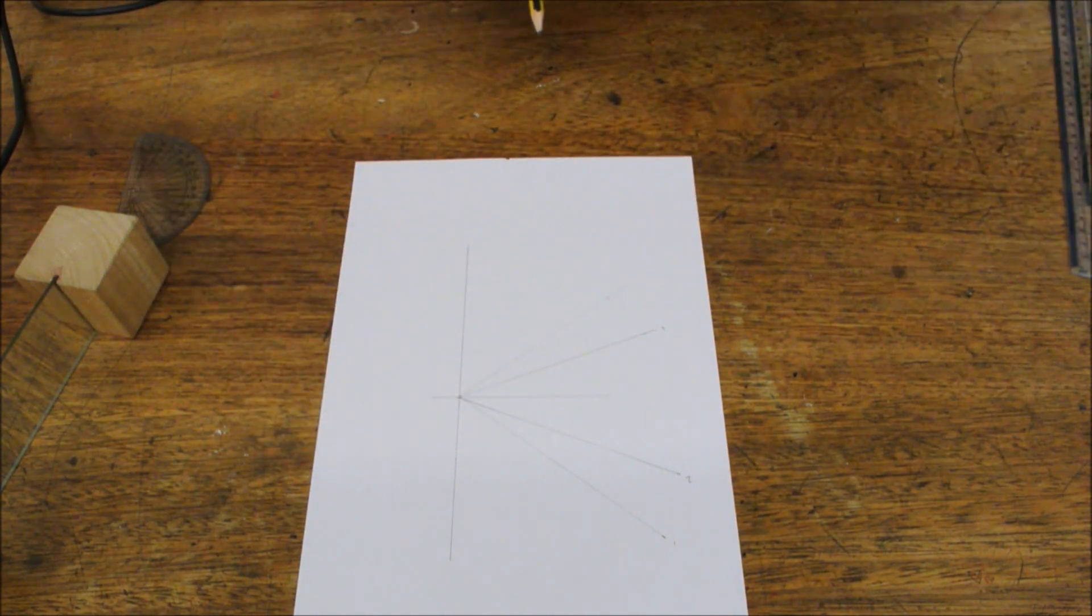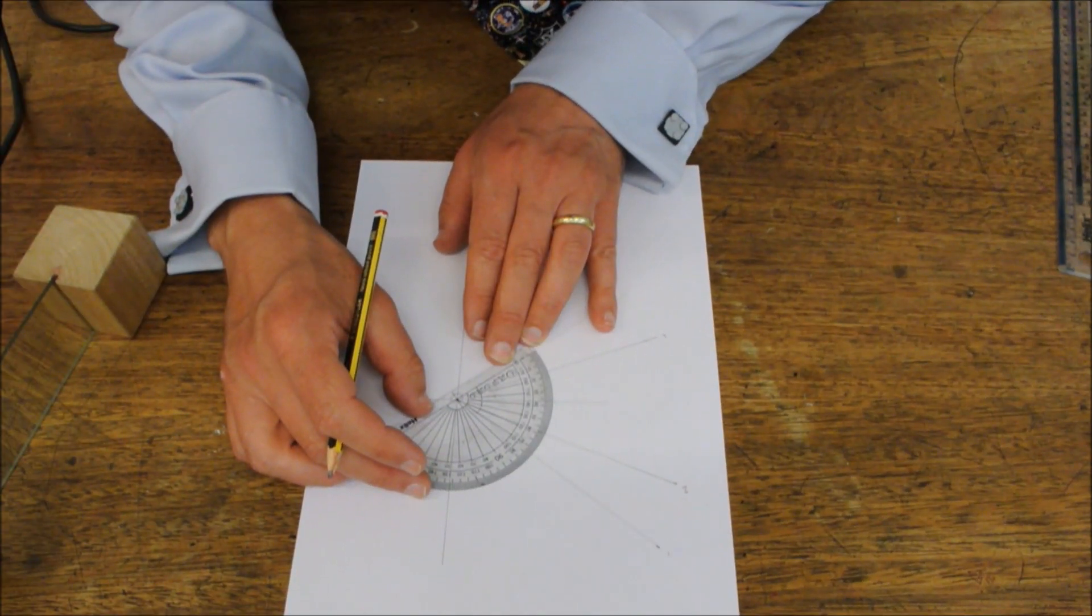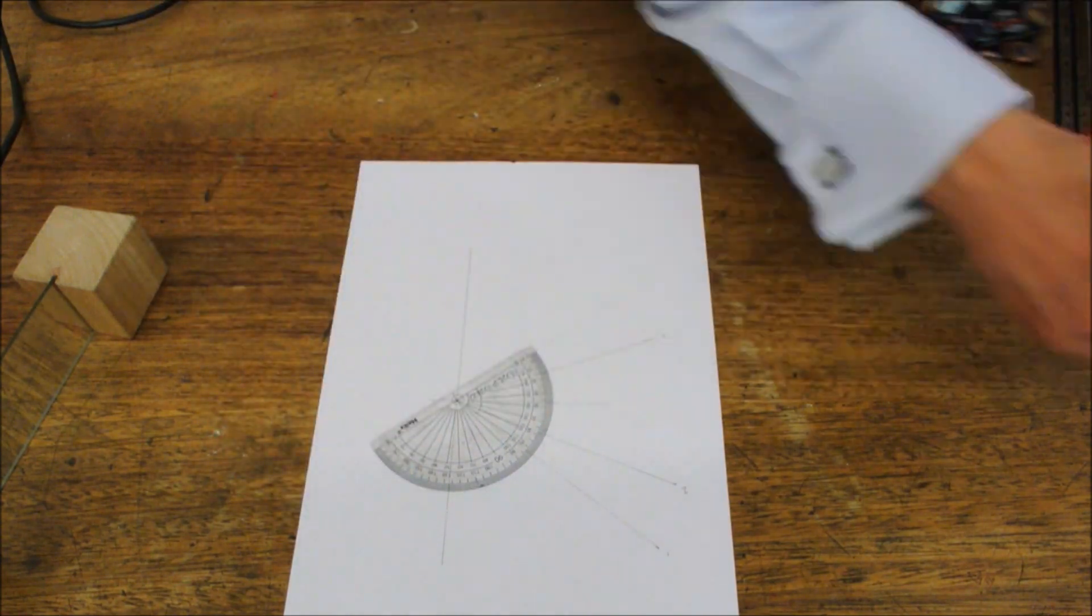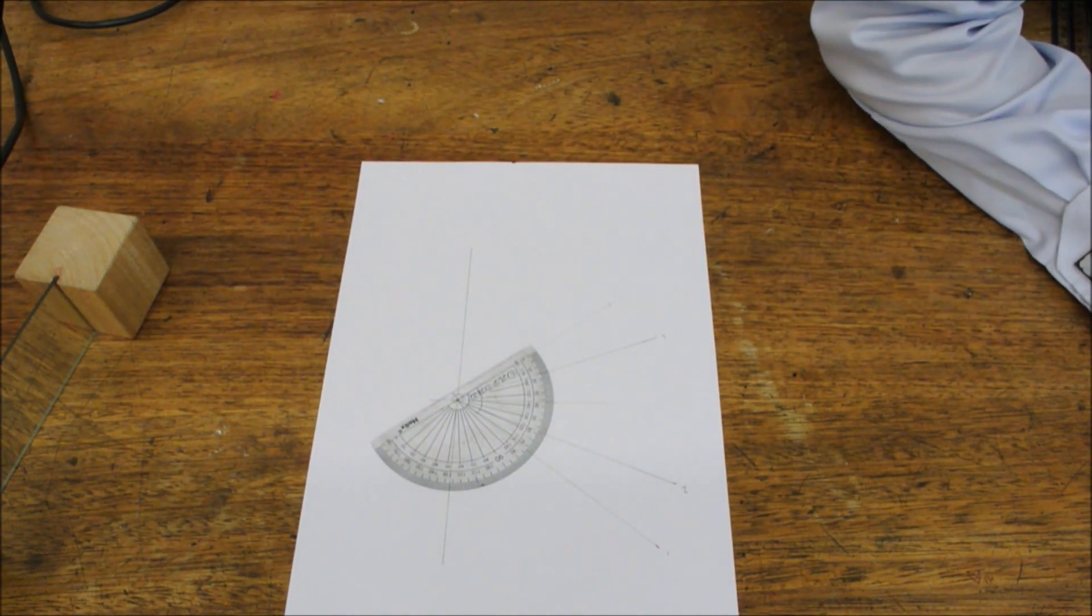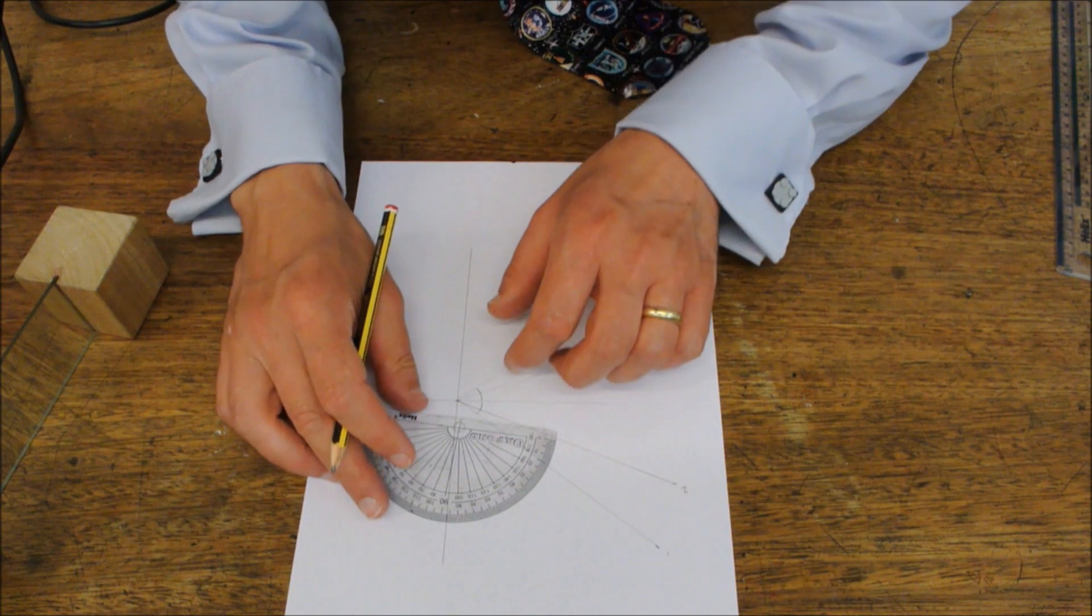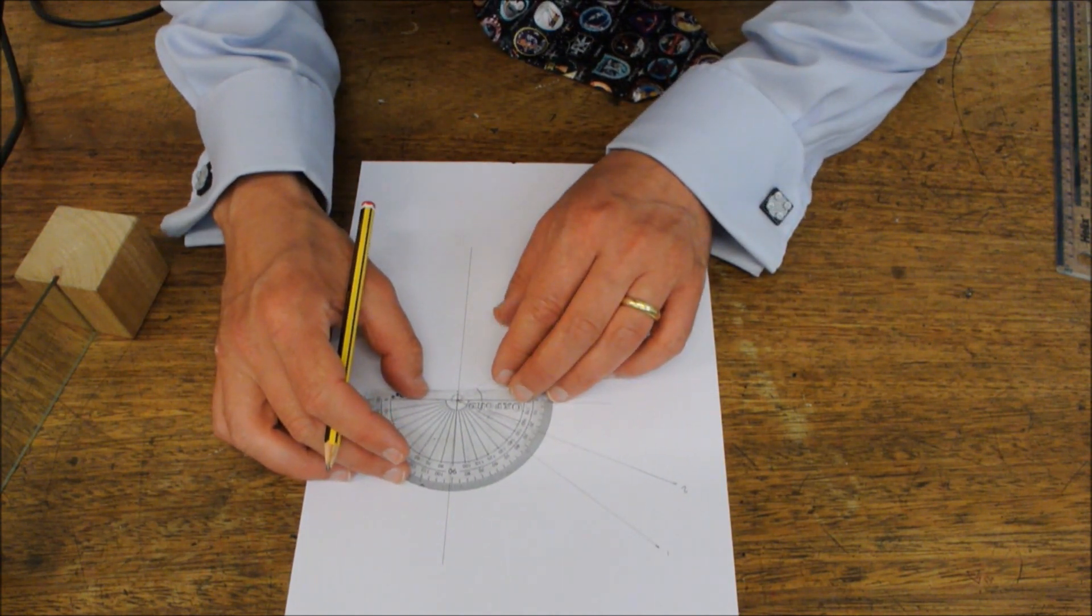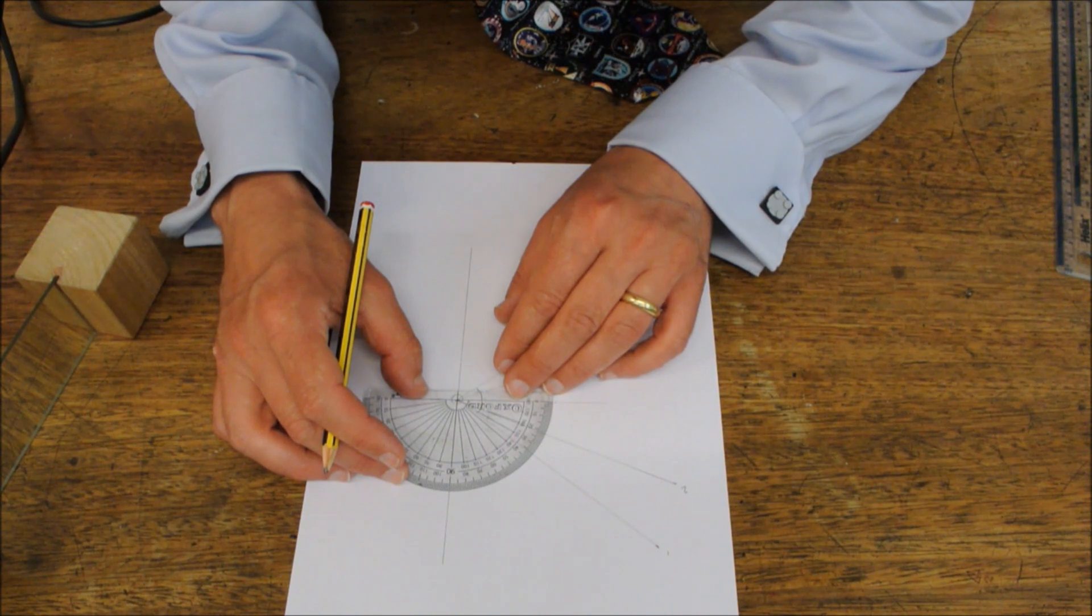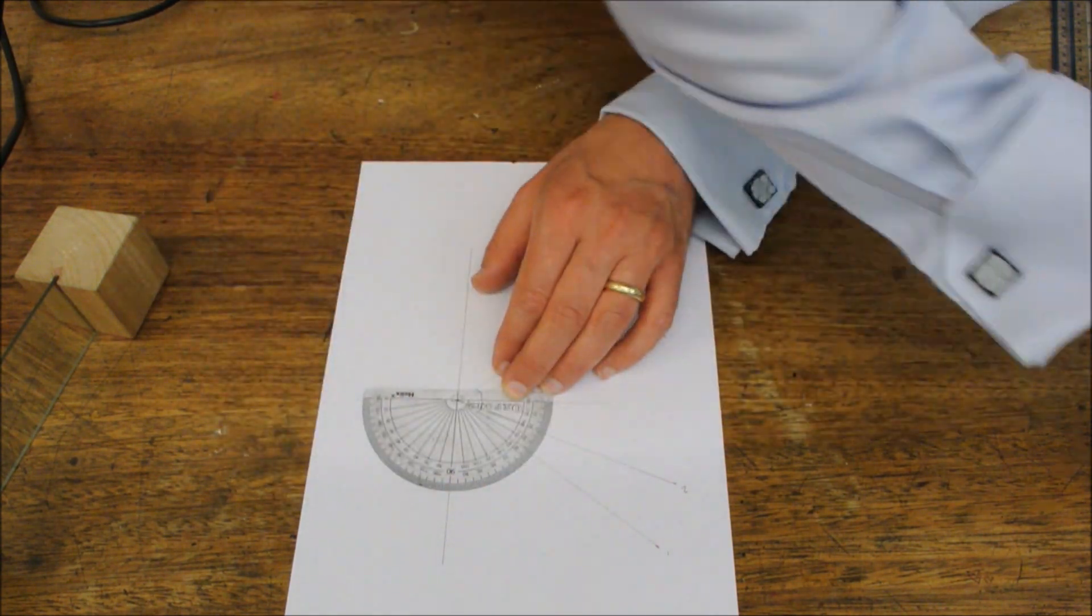Now we need to measure some of these angles. I make that 37 degrees for the incident angle. And I make that 36 degrees for the reflected angle.